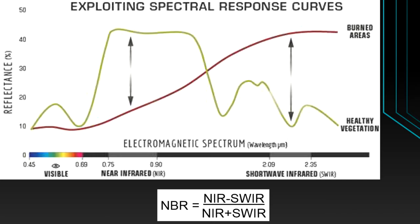This is why we use NIR and SWIR to study burn areas. The formula is: NBR = (NIR − SWIR) / (NIR + SWIR). In the near infrared side, healthy vegetation is at the peak — above 40% reflectance — because of the leaf characteristic that when energy interacts with the leaf, it reflects in higher amounts.